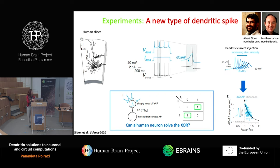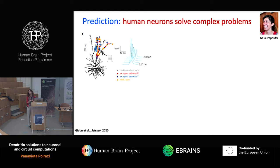This non-monotonic transfer function is interesting because it could be solving a different type of computation than amplification or coincidence detection. We thought of a nonlinear problem called the exclusive OR problem — a logical gate where you have two pathways, A and B. If none of these pathways arrive, the gate is closed and dendritic spikes are not generated. If either pathway is activated, you have the ideal response. But if both are activated, you get a very weak response because of this dropping amplitude.